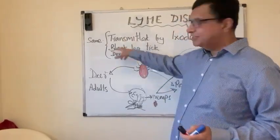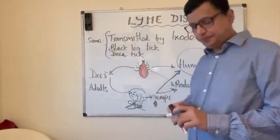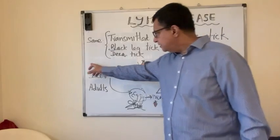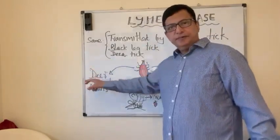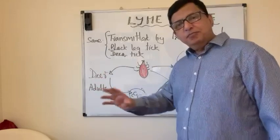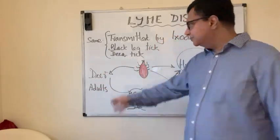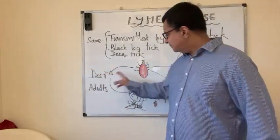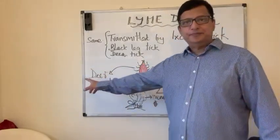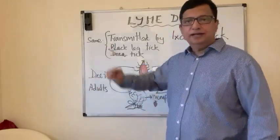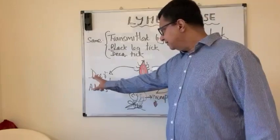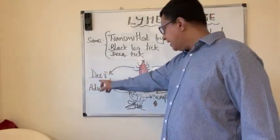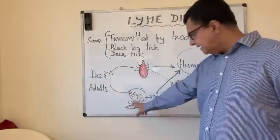Borrelia is the biggest spirochete. Lyme disease is transmitted by the Ixodes tick, also called the black-legged tick or deer tick — all these names refer to the same tick. The adult black-legged tick lives on the white-tailed deer, but the deer has immunity to Lyme disease and the tick cannot infect the deer; it is only an obligatory parasite on the deer.